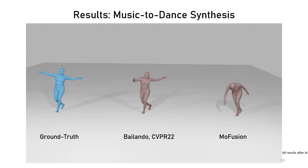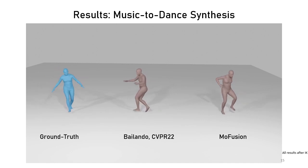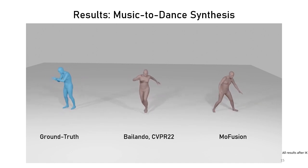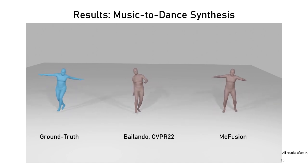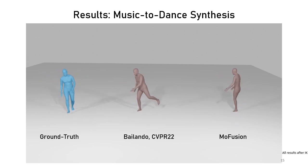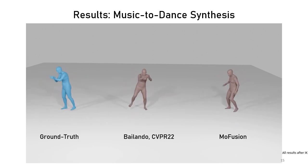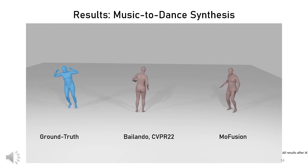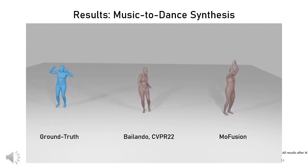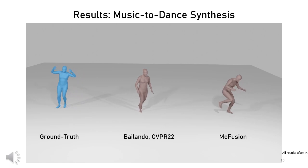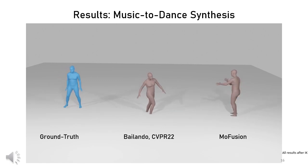Let's compare our results with some of the existing state-of-the-art methods. We see that our choreographies are non-repetitive. Also, we observe that several existing methods generate exactly the same motion as the ground truth, hinting towards overfitting.